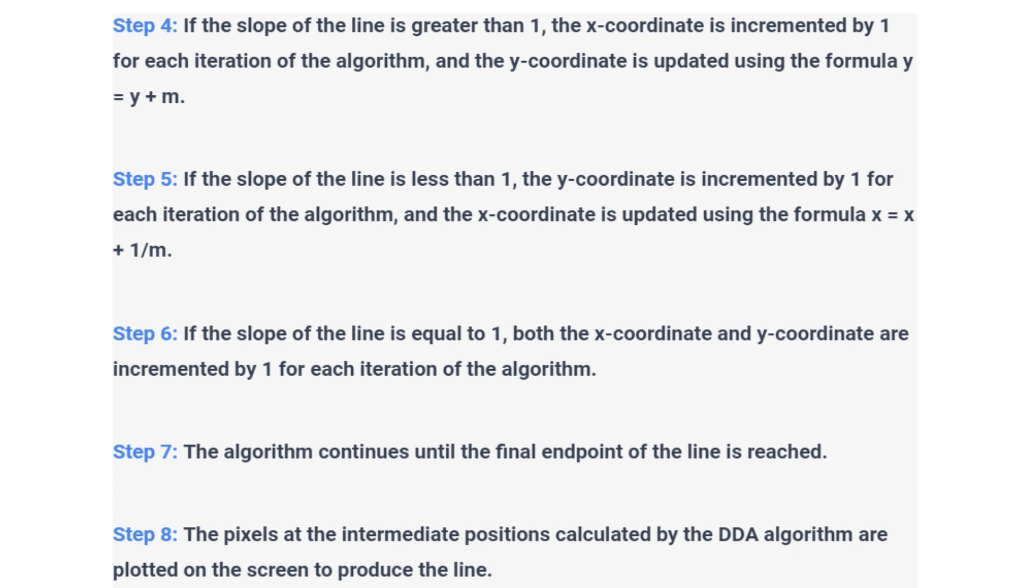Step 6. If the slope of the line is equal to 1, both the x coordinate and y coordinate are incremented by 1 for each iteration of the algorithm.